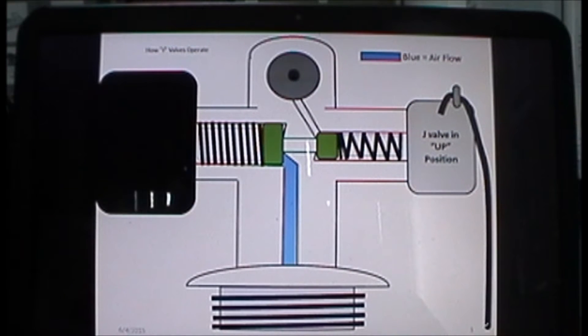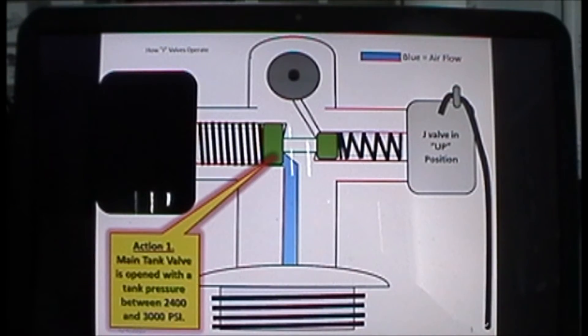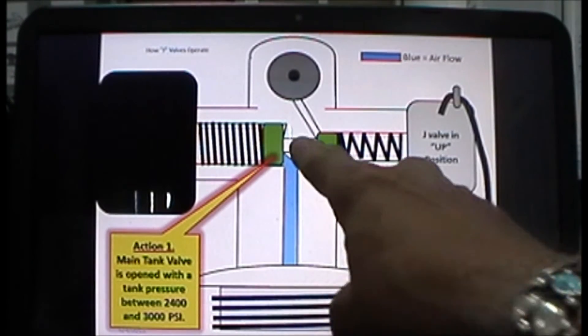Here we have a PowerPoint presentation showing how a J valve or J reserve valve works. As you can see on the screen, you have air pressure coming in here at the main valve.